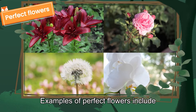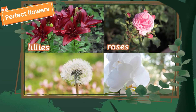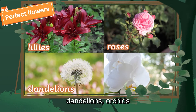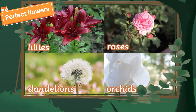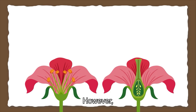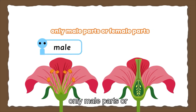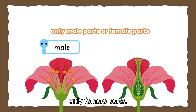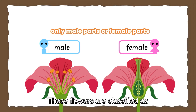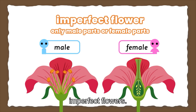Examples of perfect flowers include lilies, roses, dandelions, orchids, and many more. However, some plants have evolved to produce flowers with only male parts or only female parts. These flowers are classified as imperfect flowers.